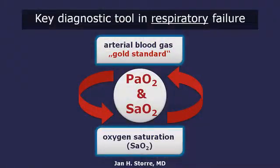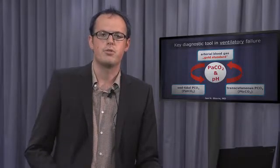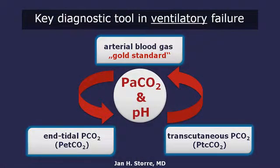The key diagnostic tool in respiratory failure type 1 or hypoxemic respiratory failure is the partial pressure of oxygen in the blood or the oxygen saturation. These values can be monitored by arterial blood gas analysis or pulse oximetry. Regarding ventilatory failure, we need to monitor the pH and the partial pressure of carbon dioxide. This could be done by arterial blood gas analysis, end-tidal pressure of carbon dioxide, or transcutaneous pressure of carbon dioxide.